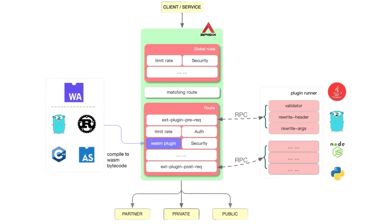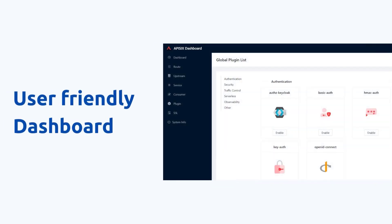APISIX was initially written in Lua, but it also supports new custom plugin development in multiple programming languages, with officially supported languages such as Java, Go, Node.js, and Python. Apache APISIX is the first open-source API gateway that includes a built-in, low-code dashboard, which offers a powerful, flexible UI for developers to use.